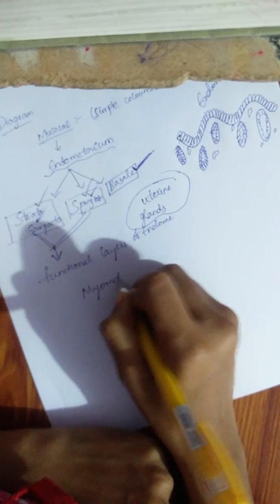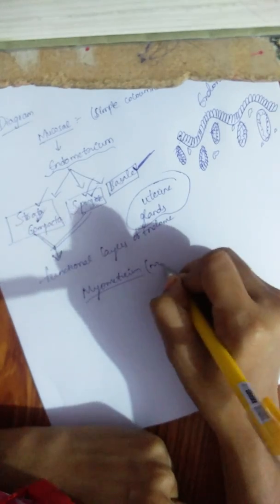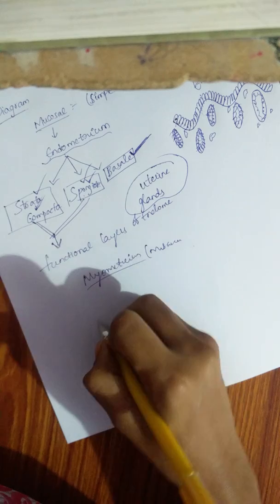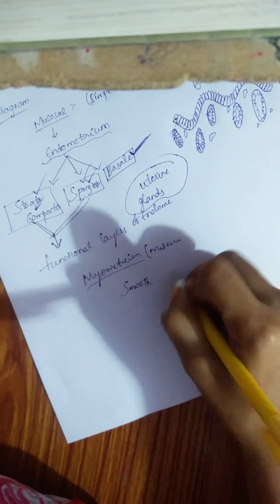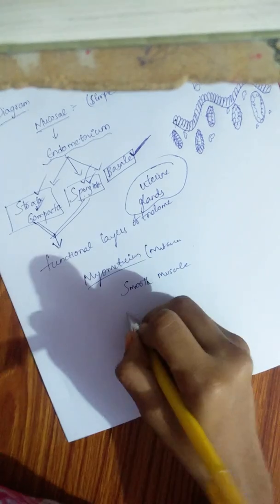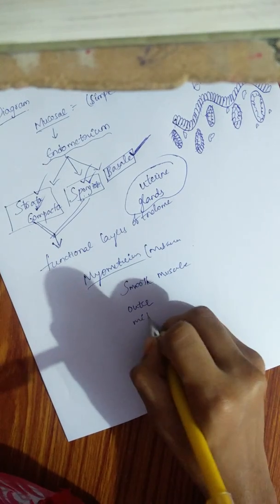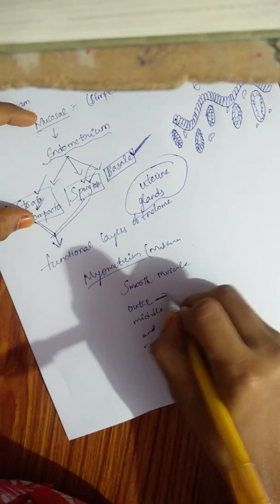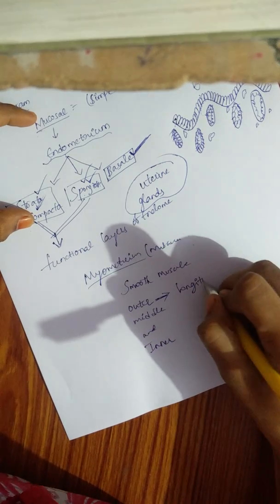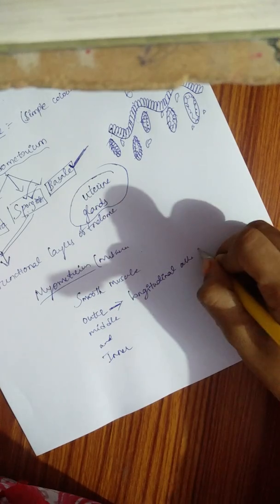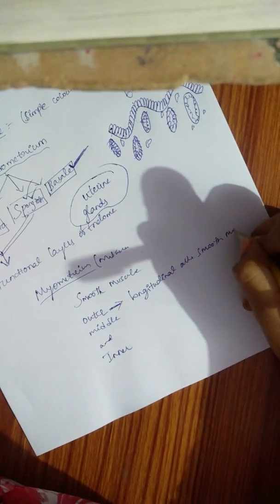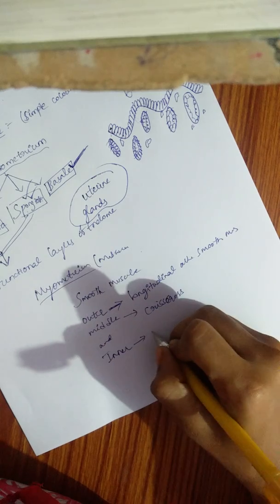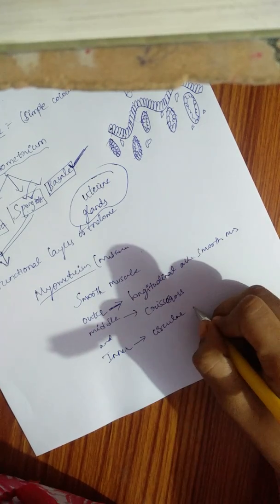Next is the myometrium, or muscular layer. In the myometrium, smooth muscles are present arranged in three orientations: the outer layer has a longitudinal arrangement, the middle layer has a crisscross arrangement, and the inner layer has a circular arrangement of smooth muscles.